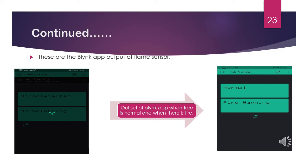Now we show the output for the flame sensor in the Blynk app. In the first picture it shows 'normal'. There may be some residual text from the previous tilt sensor output due to a bug in the app that needs to be updated by the company. Even so, 'normal' means no fire and no tilt is detected. In the next picture, as soon as we lit a candle nearby and the sensor detected the fire, it immediately showed 'fire warning' on the LCD screen.